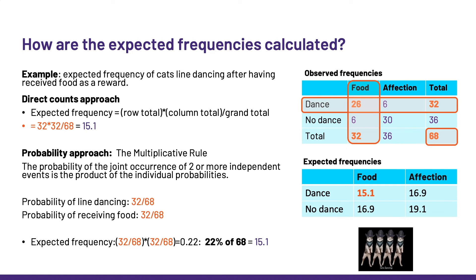If the direct counts approach doesn't make sense, let's try the probability approach. The multiplicative rule states that the probability of a joint occurrence of two or more independent events is the product of the individual probabilities. In this experiment, regardless of the rewards, the probability of a cat line-dancing is 32 divided by 68. Similarly, regardless of the outcome, the probability of a cat receiving food as a reward is also 32 divided by 68. So the probability of these two independent events occurring at the same time is simply the multiplication of the two probabilities, giving 0.22, and 22% of 68 is 15.1. This is done for all four groups.